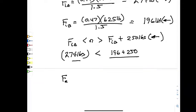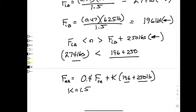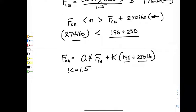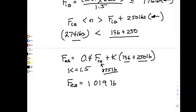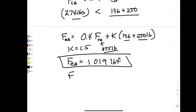We calculate the equivalent radial load at A as: F_eA = 0.4 × (radial load at A) + K × (F_induced_B + F_external) = 0.4 × 875 + 1.5 × (196 + 250). Using K = 1.5 since we haven't yet selected a bearing, the equivalent radial load at A is 1019 lbf. The equivalent radial load at B remains at the applied radial load of 625 lbf.